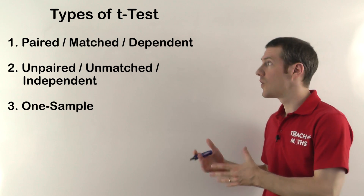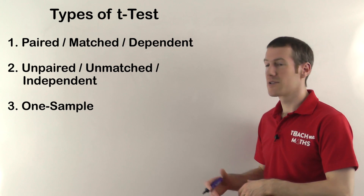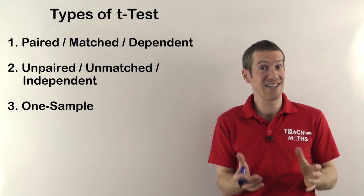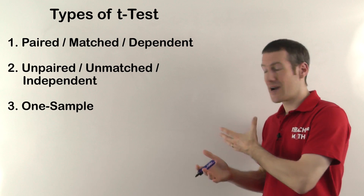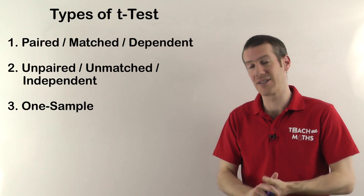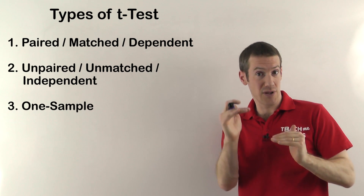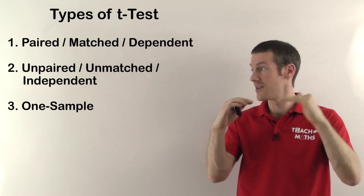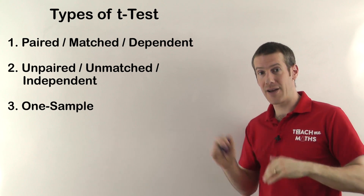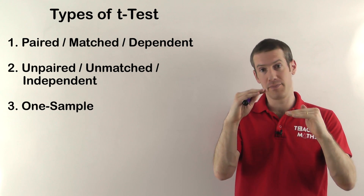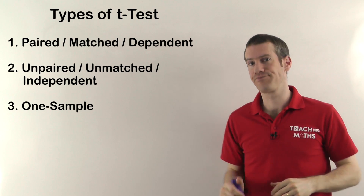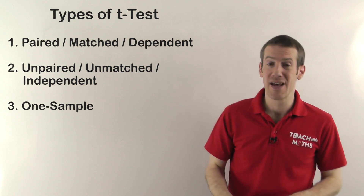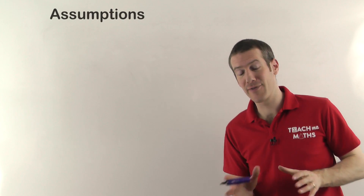Those are the three different types, and as I say, I've done three different videos — one for each type — where I go through a specific example and show you exactly how to work out the t-statistic and then how to do the hypothesis testing to compare whether or not there is an actual difference between the means. But in all three cases, you're basically comparing two means, just like with the beer — you want to see if one is bigger or different from the other.